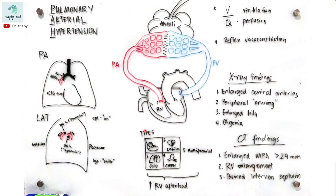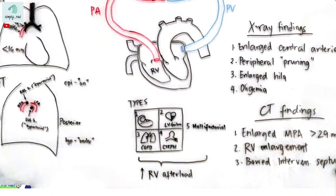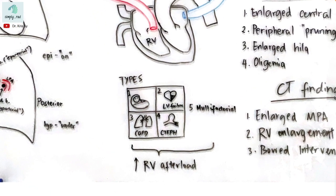There are different types or causes for pulmonary arterial hypertension. The most common are left ventricular failure and COPD. Whether it's left ventricular failure, COPD, embolism, or other causes, the common factor is that all these reasons cause an increase in right ventricular afterload.